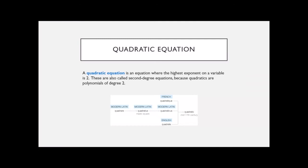I always wondered — when I hear the word "quad," I think 4. So why is it called a quadratic equation if they have an exponent of 2? I actually looked up on Google where the word comes from. Apparently it comes from Latin, which means "make square." That's why it's called quadratic — because you're squaring things. It has nothing to do with the number 4. A square has 4 sides, which is why quad is used for 4, but it comes from a Latin word meaning square.